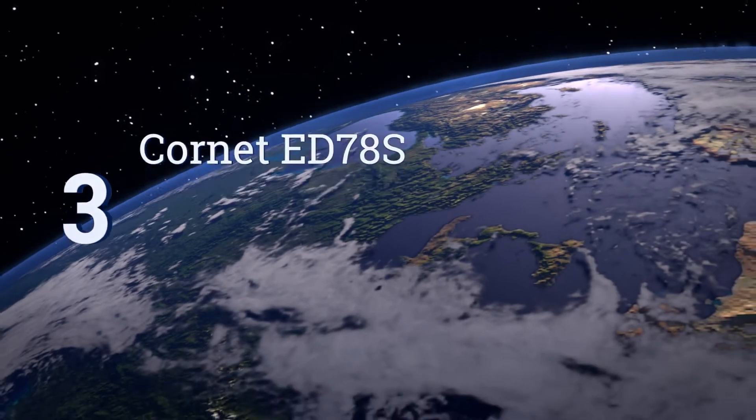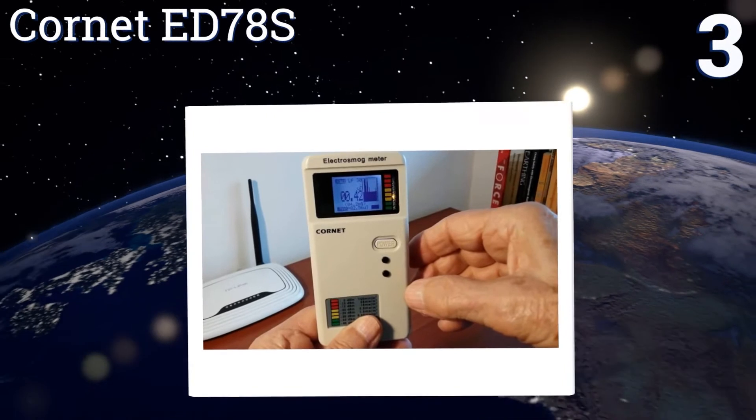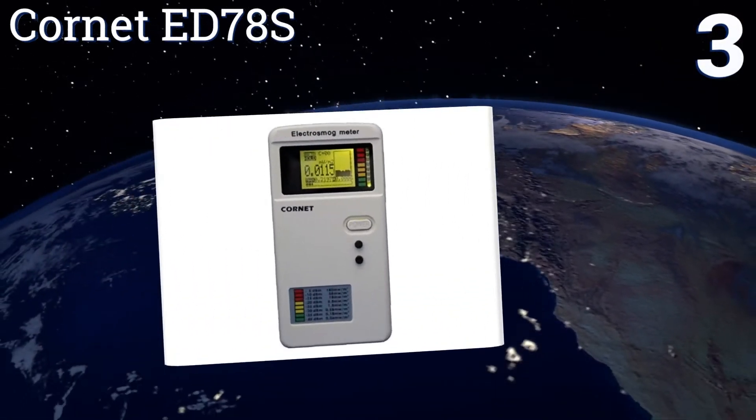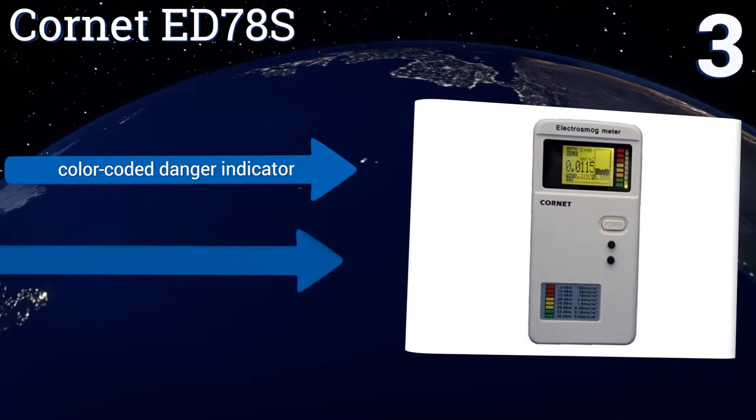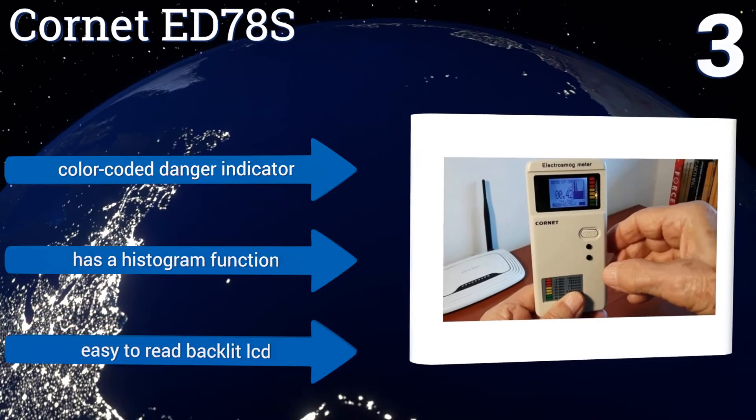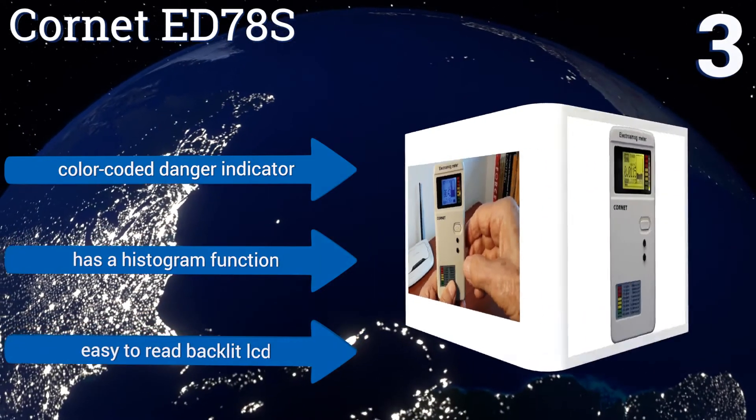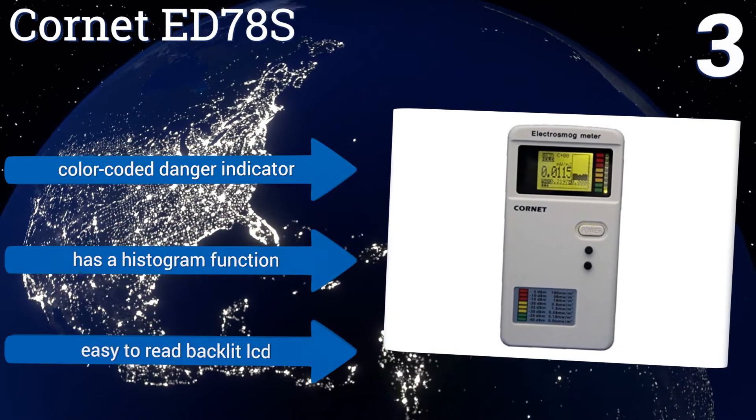Nearing the top of our list at number 3, the Cornet ED78S measures radio frequency radiation, like those from cell phones or wireless signals, and magnetic fields, like those emitted from electrical wiring in the home or outside power lines. It can pick up readings at sensitivities as low as 0.1 of a milligauss. It features a color-coded danger indicator, a histogram function, and an easy-to-read backlit LCD.